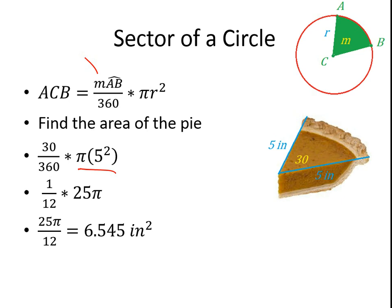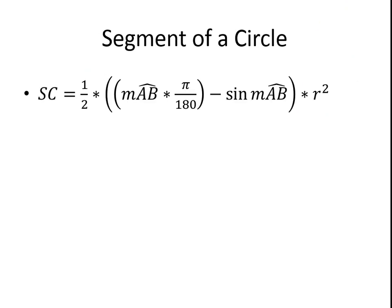The part I underline would be the entire area of the whole pie. Then we go 30 over 360, which reduces down to 1/12. We end up with 1/12 times 25π, which gets us 25π/12, or 6.545 inches squared. That pie, the surface area, the top of it, is approximately 6.545 inches squared. When we want to find the sector, we have to divide the entire area by how much of the circle we are dealing with.